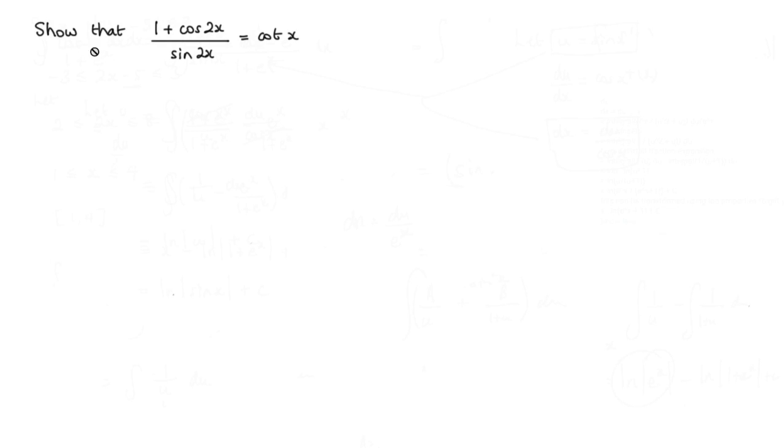In this question, we're asked to show that 1 plus cos 2x over sine 2x is equal to cot x. Now we're going to make use of some double angle formulas here. We've got cos 2x and we've got sine 2x. So the two rules we're going to be using are these ones here.